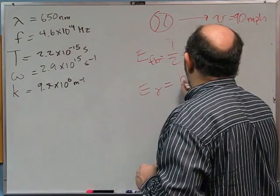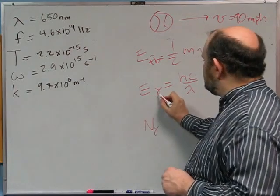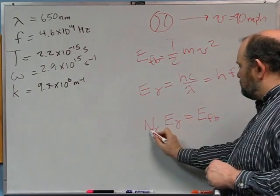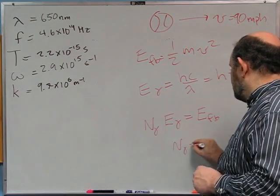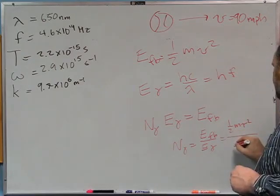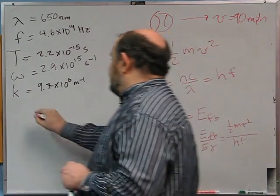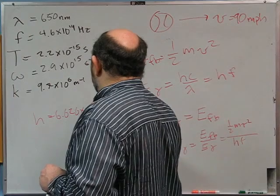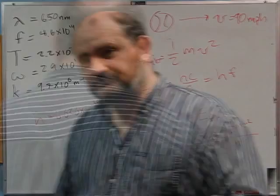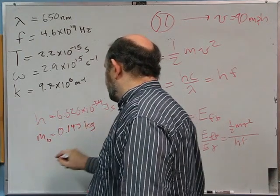The energy of one photon is hc/λ, or hf — same thing since c/λ = f. I'm using γ as the symbol for a photon. The number of photons n_γ equals the fastball energy divided by the photon energy: n_γ = (½mv²) / (hf). Planck's constant h = 6.626×10⁻³⁴ joule·seconds. The mass of a baseball is about 145 grams (0.145 kg), and 90 mph converts to 40.23 meters per second.